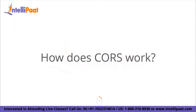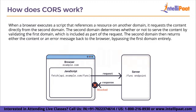Now let us move on to how CORS works. When a browser executes a script that references a resource on another domain, it requests the content directly from the second domain. The second domain determines whether or not to serve the content by validating the first domain, which is included as part of the request. The second domain then returns either the content or an error message back to the browser, bypassing the first domain entirely. If the CORS security check passes, it will serve the request; otherwise it will give an error message or block it as shown in the figure.